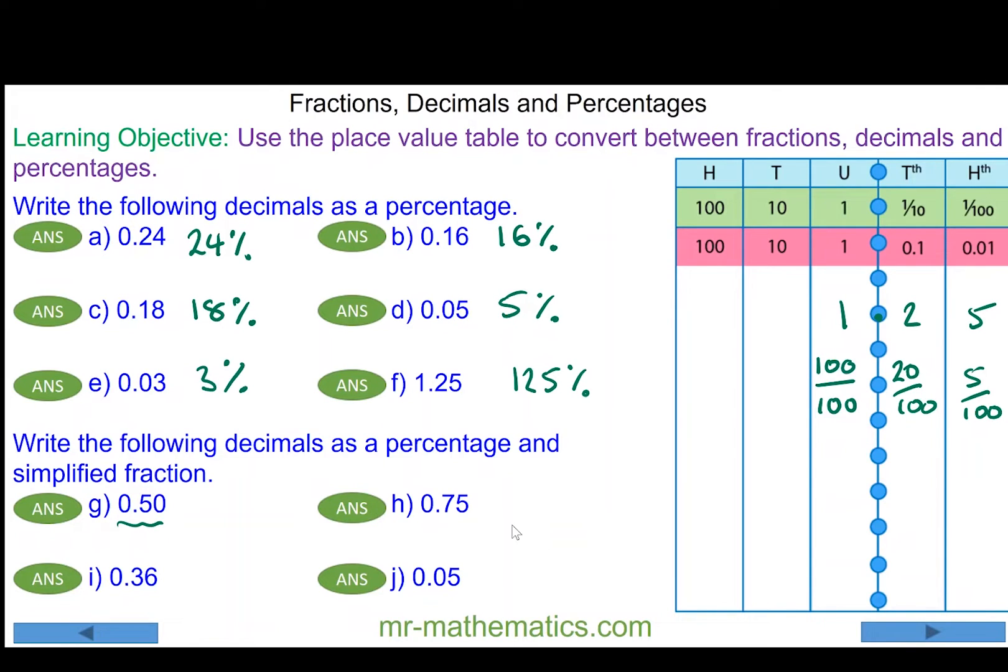In question g we're going to write 0.50 or 0.5 as a percentage. Well, we know it is fifty over a hundred, which is fifty percent. And we can simplify this by dividing by the highest common factor of fifty. Fifty divided by fifty is one, a hundred divided by fifty is two. We have one half.